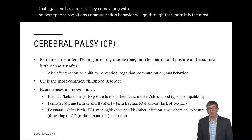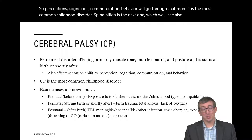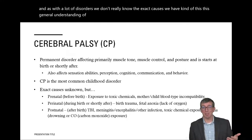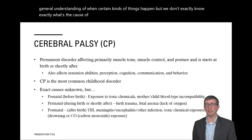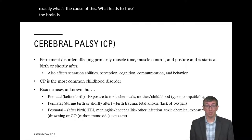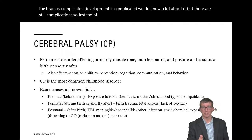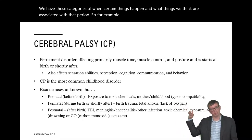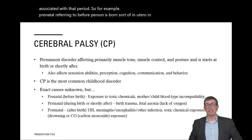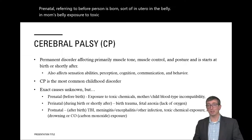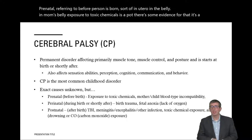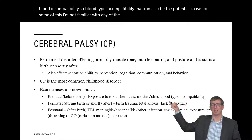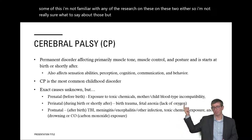CP is the most common childhood disorder; spina bifida is the next. As with many disorders, we don't know the exact causes. We have general understandings of when certain things happen, but not exactly what leads to CP. Prenatal factors include exposure to toxic chemicals and blood type incompatibility. The brain is complicated and development is complicated — so instead of saying 'this is the cause,' we have categories of when things happen and what's associated with that period.